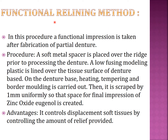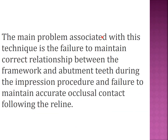Functional relining technique: a functional impression is taken after the fabrication of the partial denture. A soft metal spacer is placed over the ridge area, then low-fusing modeling plastic (green stick compound) is lined over the tissue surface of the denture base, heated, tempered, and water molding is carried out. It is then scraped uniformly by 1mm to create space for the final impression. The advantage is it controls displacement of soft tissues by controlling the amount of relief provided.